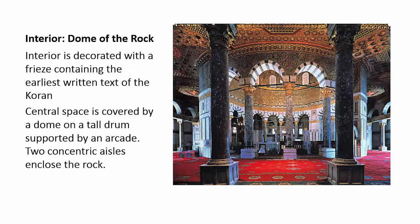Here's the inside of the Dome of the Rock. Look at these Roman forms — Roman arches and columns. It looks like the inside of early Byzantine churches. But the interior is decorated with a frieze all the way around it containing the earliest written text of the Quran — the whole written text of the Quran is inside this building. Inside the central space, we have a dome on a tall drum, then an arcade of columns, and two concentric aisles that enclose the actual rock.